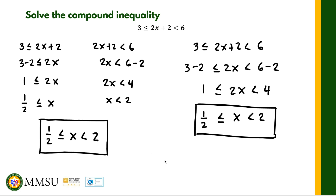For the set builder notation, we just add braces and write x such that — so the set builder notation is: the set of all x such that one half is less than or equal to x and x is less than 2.